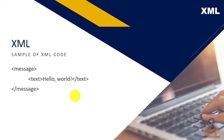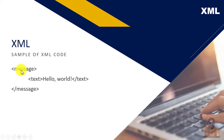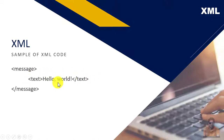You can see the sample here. We have a root element called 'message' in this XML file, and we have another element — another tag — inside of the root element, which is the 'text' tag. Inside of the text tag we have data called 'Hello World' in this XML example.